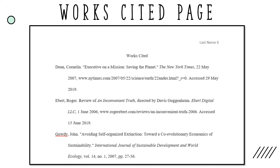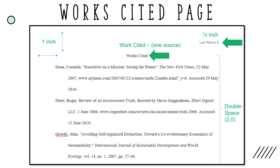End your essay with your Works Cited page, which should be formatted using most of the same features as the rest of your essay. Begin it on a separate page at the end. Use one-inch margins and include your last name and page number in the upper right-hand corner, continuing consecutively. Title your page "Works Cited" if citing multiple sources, or "Work Cited" if only one. Do not italicize the title, use quotation marks, or make it bold. Double-space all citations and don't skip extra space between entries. Indent the second and any subsequent lines of each entry by one-half inch to create a hanging indent. Finally, list each entry in alphabetical order according to the first word of the entry.